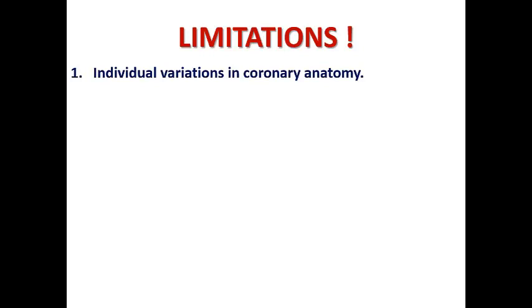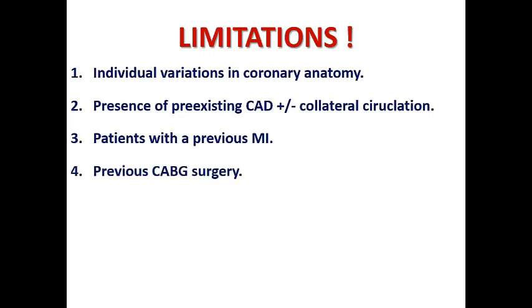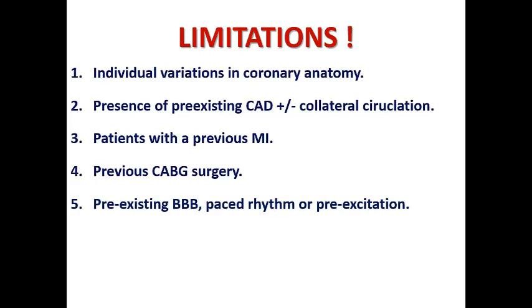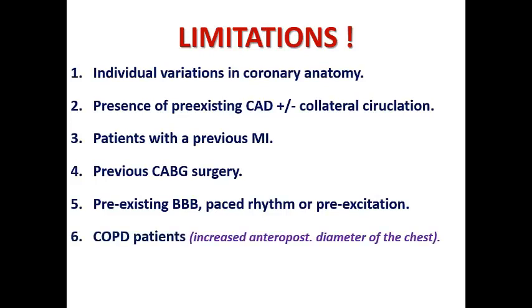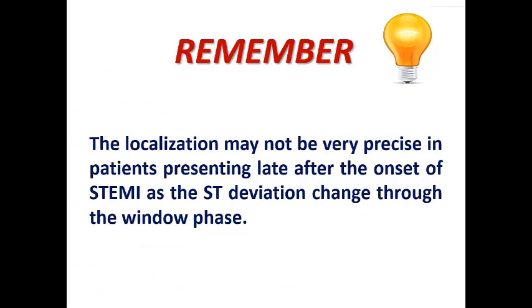Limitations of localization include: individual variation in coronary anatomy, presence of pre-existing chronic coronary artery disease with or without collateral circulation, patients with previous MI (scar areas reduce accuracy), previous CABG with grafts, pre-existing bundle branch block, paced rhythm or pre-excitation, COPD patients with increased anteroposterior chest diameter, and inadequate representation of the posterior, lateral, and apical walls in the standard 12-lead ECG. Also, localization is less precise in patients presenting late — more than 12 hours after STEMI onset, as ST changes diminish over time.